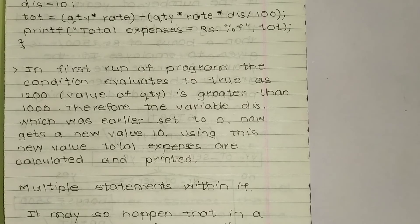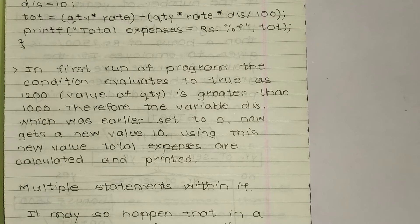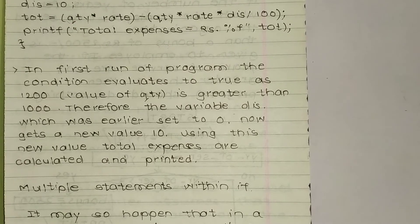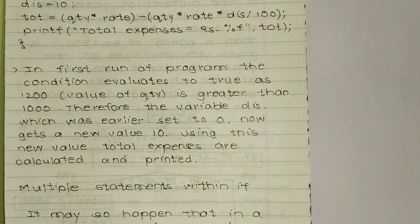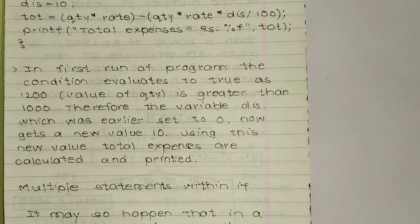If the quantity is less than a thousand, 'dis' will be equal to zero. If quantity is more than 1000, 'dis' will be equal to 10. So after entering 1200, 'dis' gets the value 10. Using this new value, total expenses are calculated and printed.